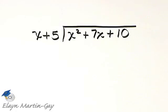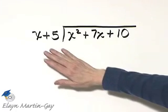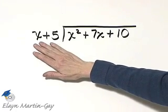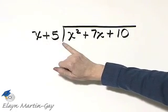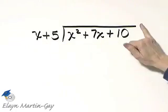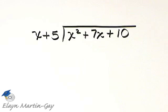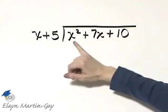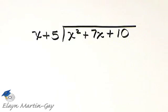For this example, we are dividing by a binomial, so I'm setting it up in long division. It's x plus 5 into x squared plus 7x plus 10.